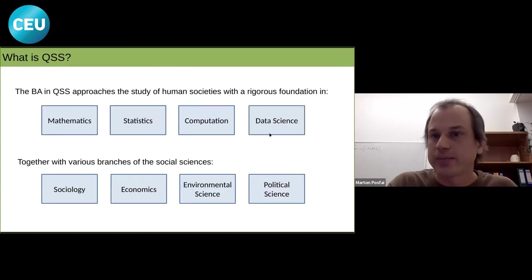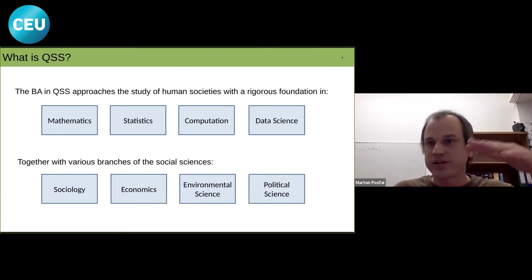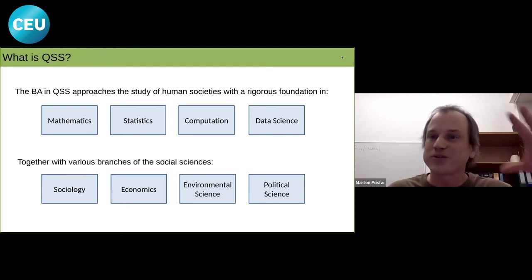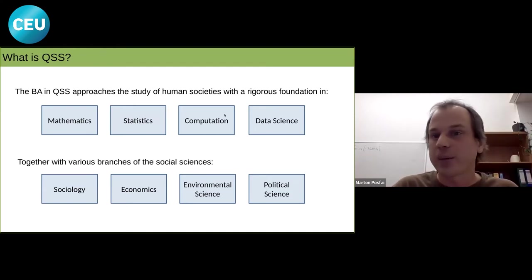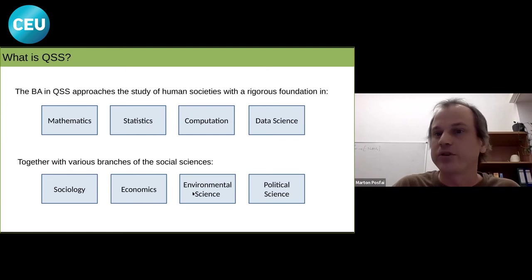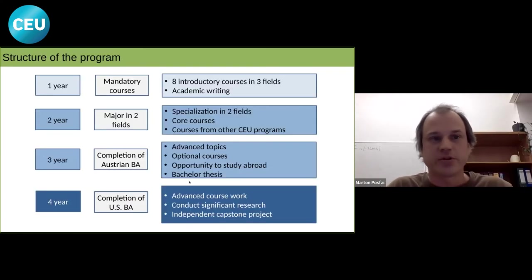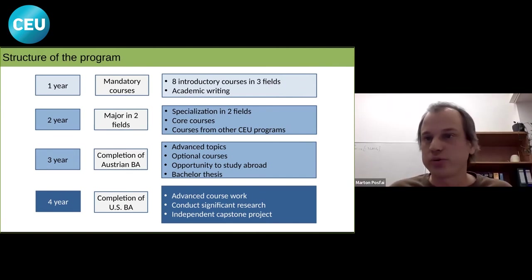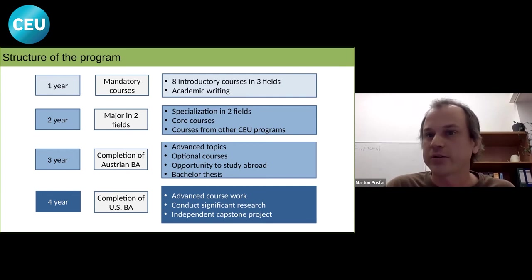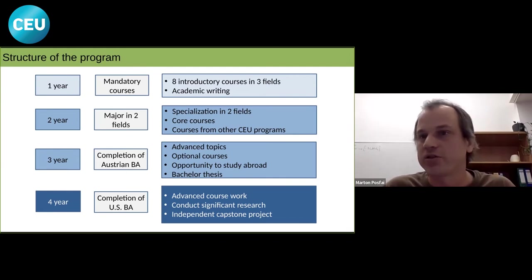The program has two parallel parts: one focused on mathematics and computational tools, and the other on social sciences including sociology, economics, political science, and environmental science. The first year consists of mandatory introductory courses across these fields. Then students choose two majors to focus on. In later years, students complete a bachelor thesis and capstone project, working with faculty from the Department of Network and Data Science or other participating departments such as sociology or economics.